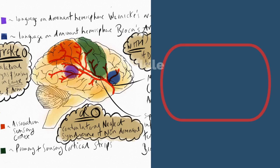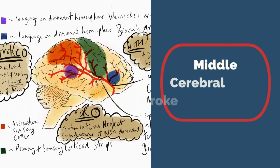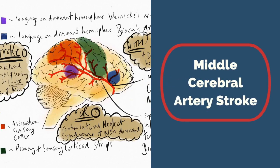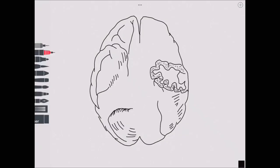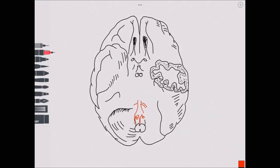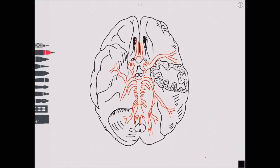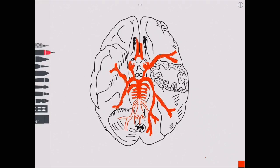Welcome back to the second of three videos in a mini-series on the functional deficits associated with cerebral territory strokes. In this video, we'll be focusing on the middle cerebral artery. To work out the likely symptoms, you first need to know the distribution of the artery in question, in this case the middle cerebral artery, and secondly know the function of the areas of the brain it supplies.